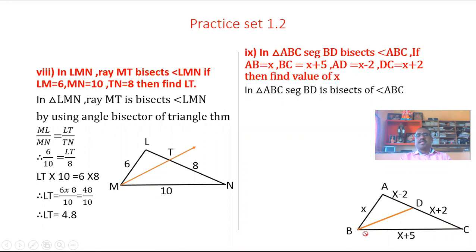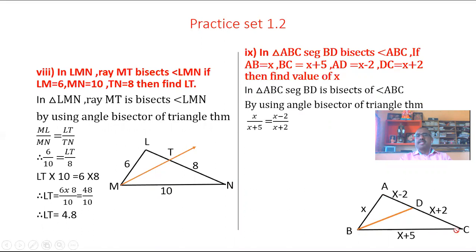By the angle bisector of triangle theorem, the ratio AB to BC is equal to AD to DC. Substituting the values: AB is equal to X, BC is equal to X plus 5, AD is equal to X minus 2, DC is equal to X plus 2. Cross multiplication gives X multiplied by X plus 2 is equal to X plus 5 multiplied by X minus 2.